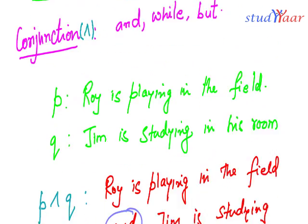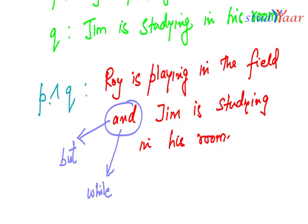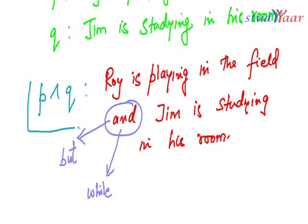Just understand that when we talk about conjunction, the compound statement is true only when both of the primitive statements are true. So P conjunction Q is true only when Roy is indeed playing in the field and Jim is indeed studying in his room. If Jim is not studying in his room, then P conjunction Q is false. For conjunction to be true, all the primitive statements it comprises must be true.